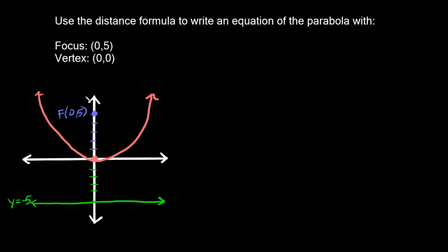Now that we have our parabola drawn, a couple other things to point out. The axis of symmetry for a parabola always runs through the vertex, so if we drew our axis of symmetry it would run right through the parabola like that. The vertex always lies on the axis of symmetry, and that's also true for the focus — it also always lies on the axis of symmetry. The directrix is always perpendicular — it always creates a right angle with the axis of symmetry.